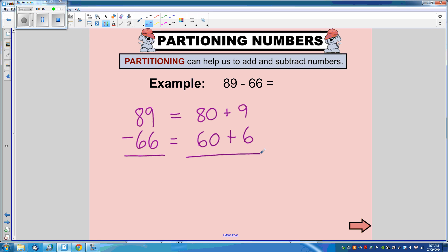Now we can go ahead and subtract. So we're going to subtract 60 from 80. 80 take away 60 is 20, and 9 take away 6 is 3.